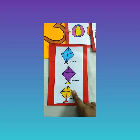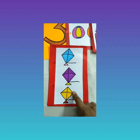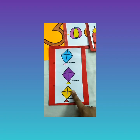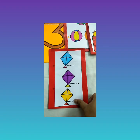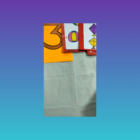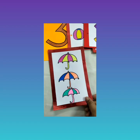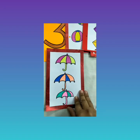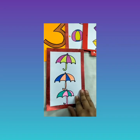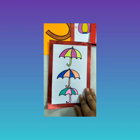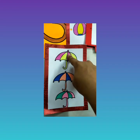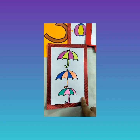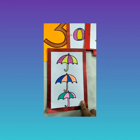Count again, children — count with me loudly! One, two, three — this is also number three. In the rainy season, what do we use to protect ourselves from rain? We use umbrellas! How many umbrellas do I have here? One, two, three — I have three umbrellas!